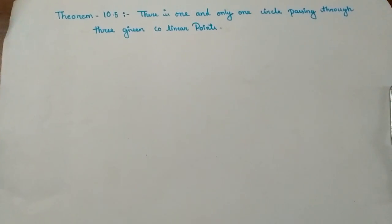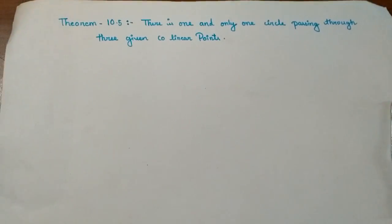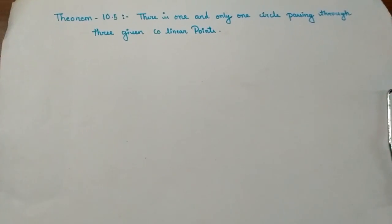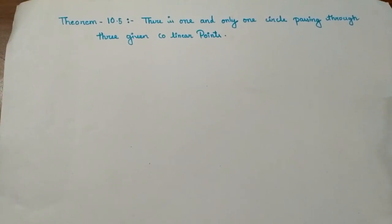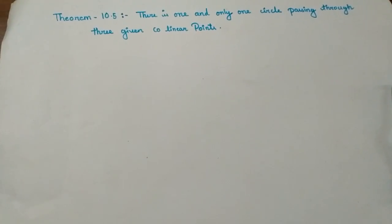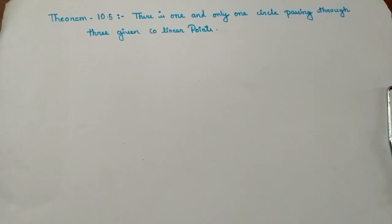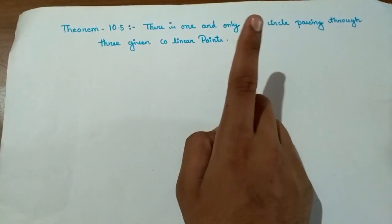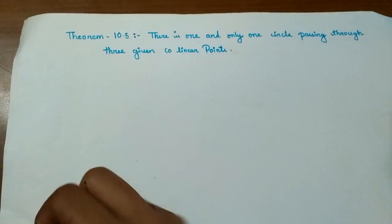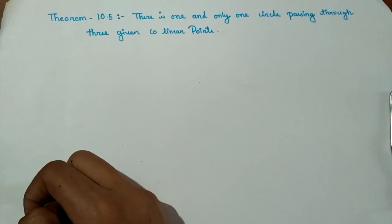Hi friends, welcome to my YouTube channel Smart Study Point. In this video, I will tell you about Theorem 10.5 of Class 9 NCERT book Chapter Circles. Theorem 10.5 states that there is one and only one circle passing through three given non-collinear points.